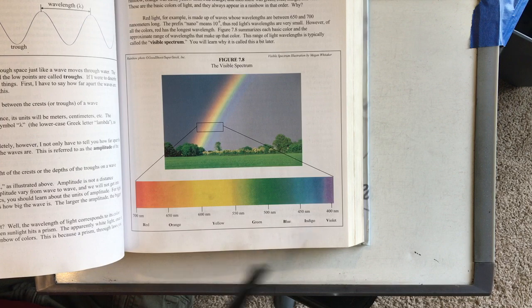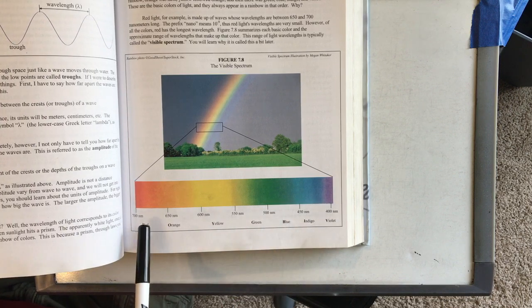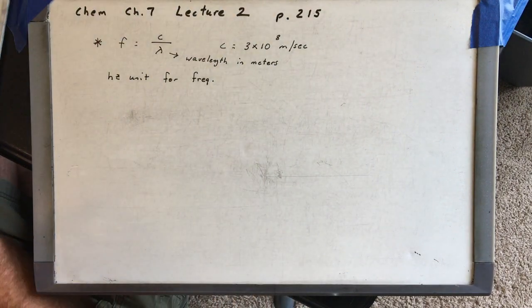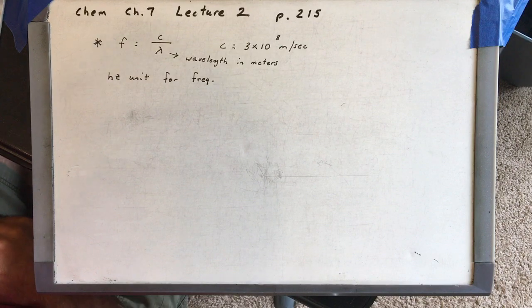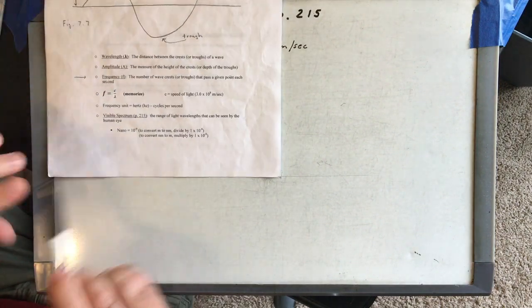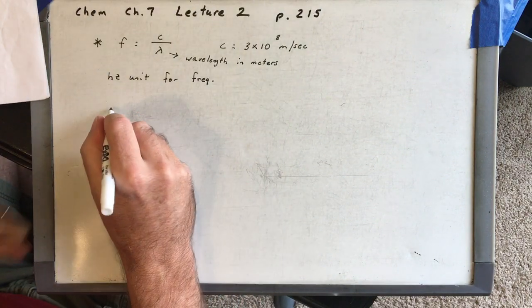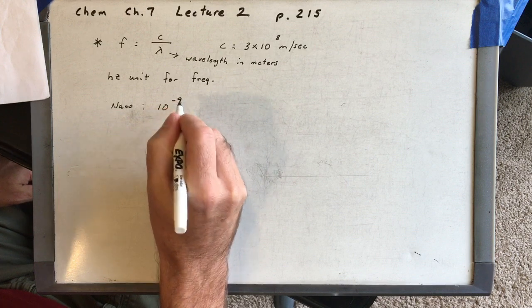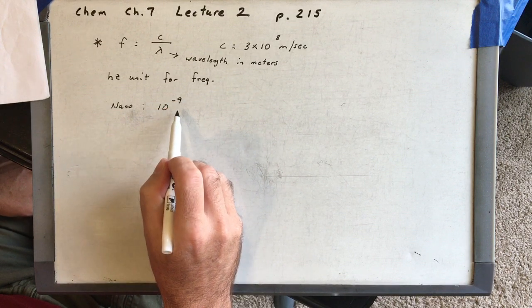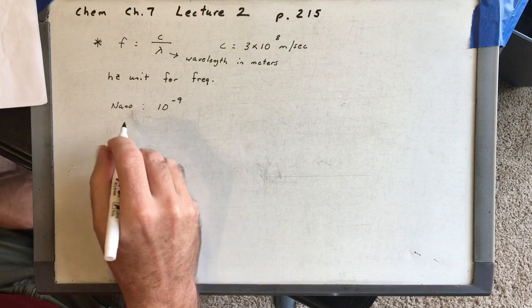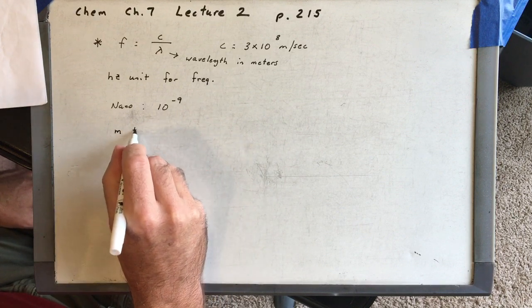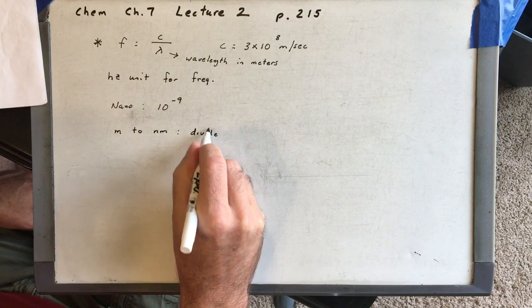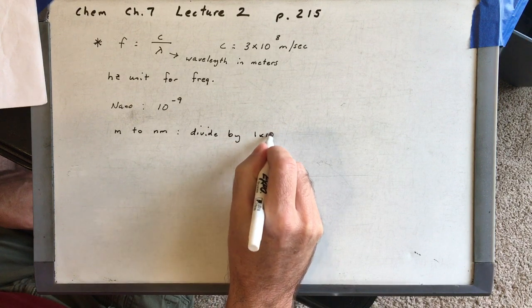The human eye can see between 400 and 700 nanometers, but light consists of a much larger spectrum than that. Let's talk about nanometers for just a second. Nano means 10 to the minus 9 — that's how small light is. So to convert meters to nanometers, as shown at the bottom of your notes, you're going to divide by 1 times 10 to the minus 9.